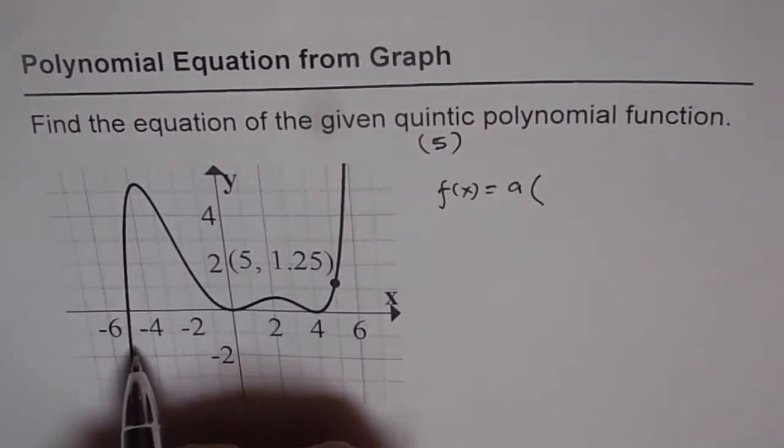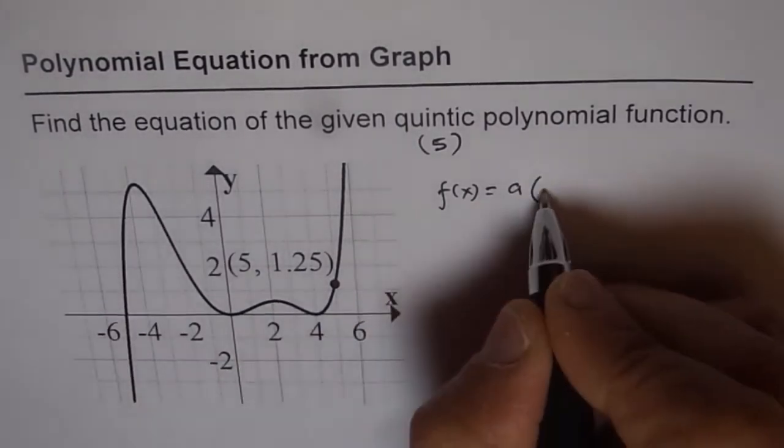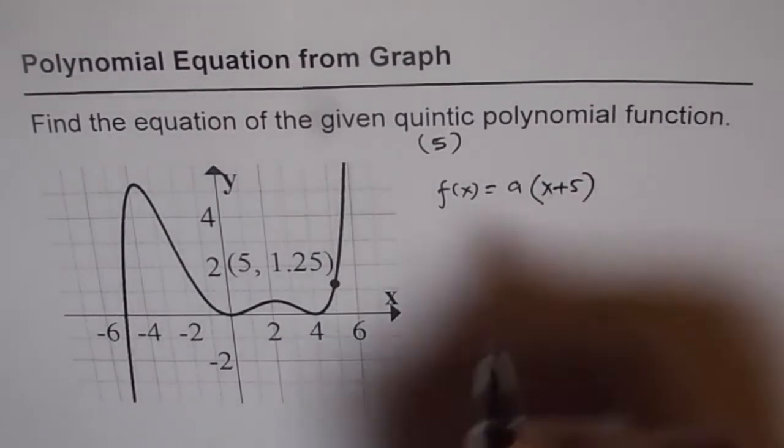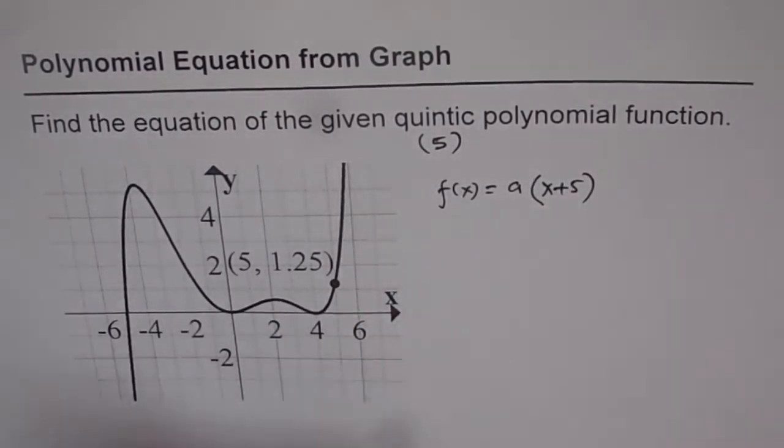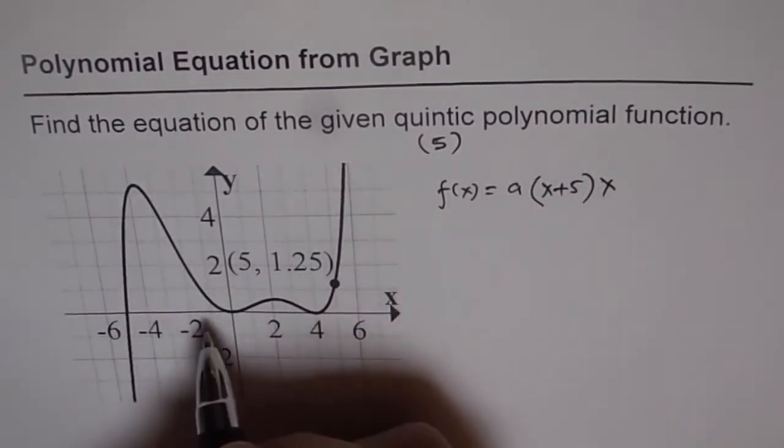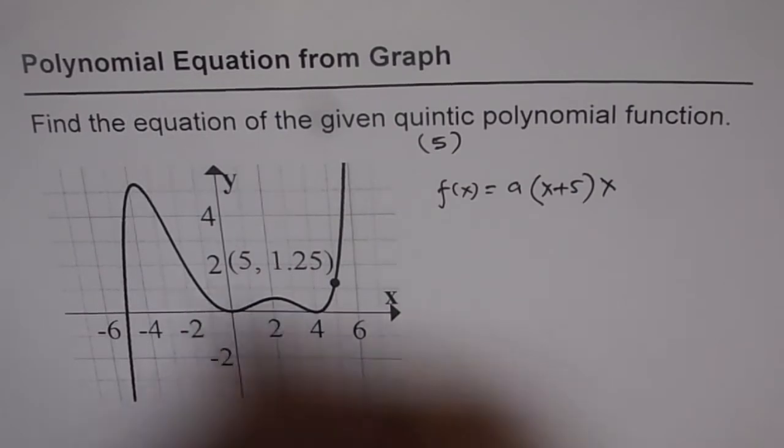So the first factor is here at minus 5. So it will give you x plus 5. The next one is at 0, so it is x and it seems it bounces back. So it is of order 2.